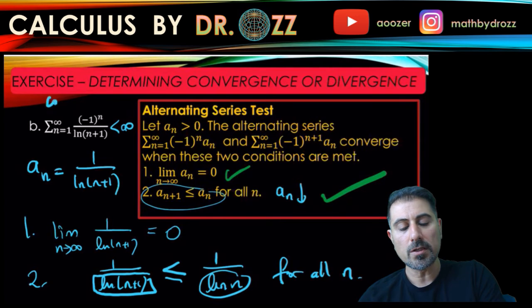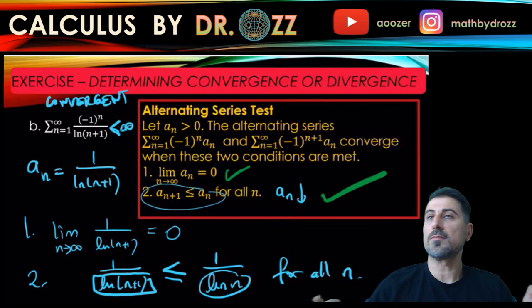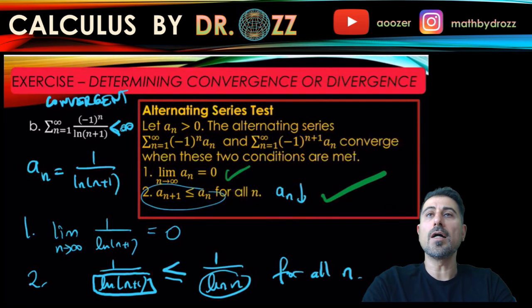I can either write convergent here or the notation saying this is less than infinity means essentially this is a convergent infinite series.